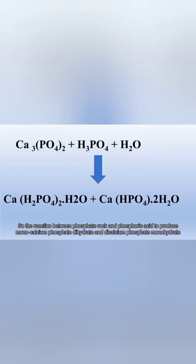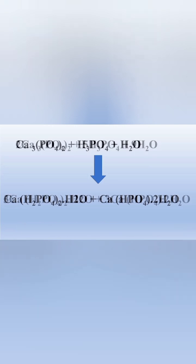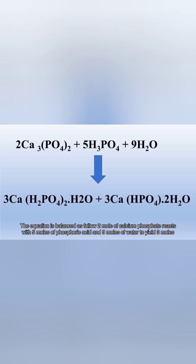The reaction between phosphate rock and phosphoric acid produces monocalcium phosphate dihydrate and dicalcium phosphate monohydrate. The equation is balanced as follows: two moles of calcium phosphate reacts with five moles of phosphoric acid and nine moles of water.